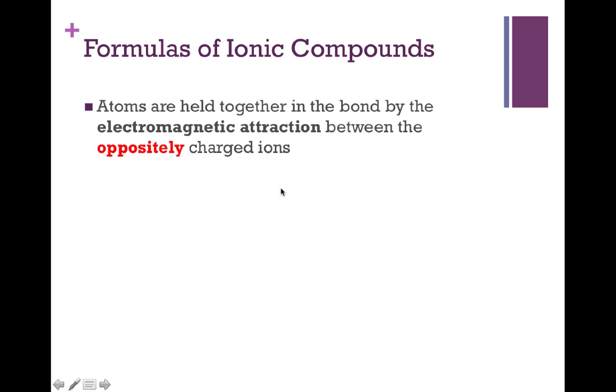So now that we've established what an ionic bond actually is, let's start talking about how we determine the formula of ionic compounds. The first thing we'll say here is that atoms and ionic bonds are held together by electromagnetic attractions, and that has occurred between the oppositely charged particles. If you remember how magnets work, the north end of a magnet is always going to be attracted to the south end of a separate magnet.